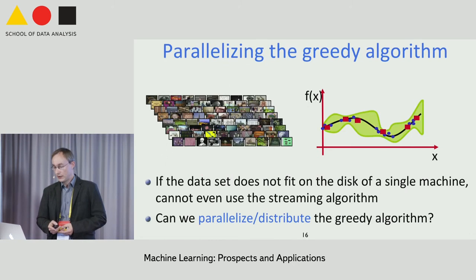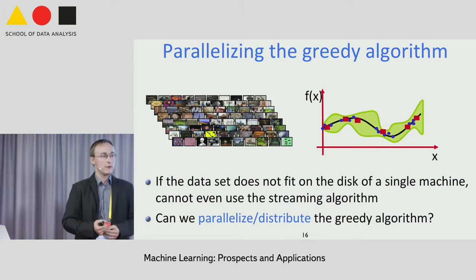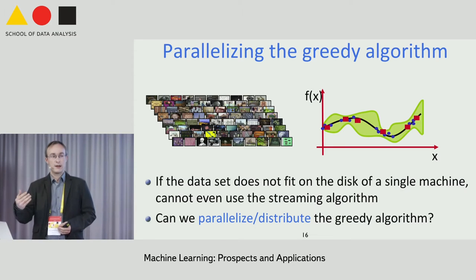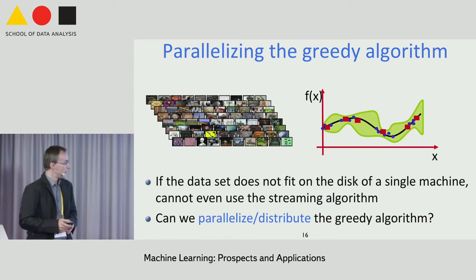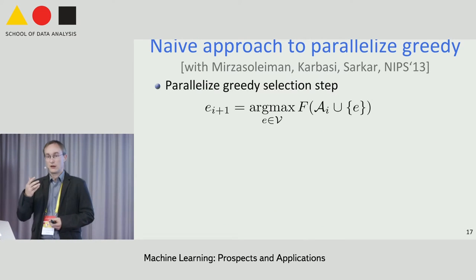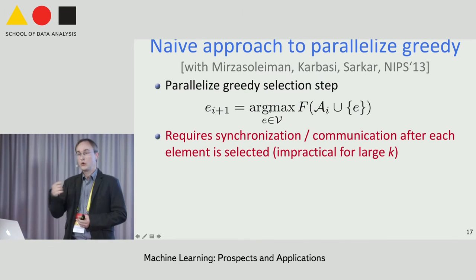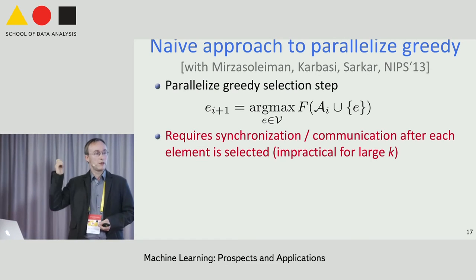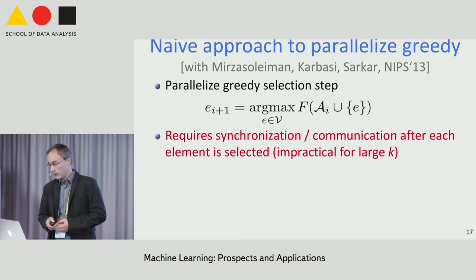What if your dataset is so big it can't even fit on disk on a single machine—it's spread across a cluster? Is there room for parallelism? One approach is to parallelize the key subroutine in greedy—selecting the next element. That's easily parallelized, but you must communicate after every single element selection, which is costly when picking tens or hundreds of thousands of points in a nonparametric learning problem.